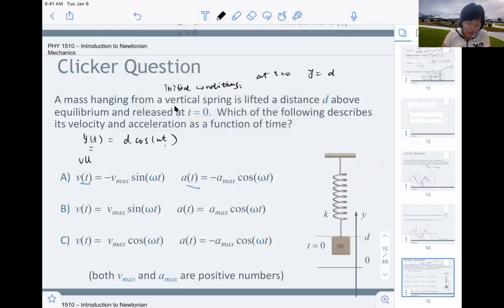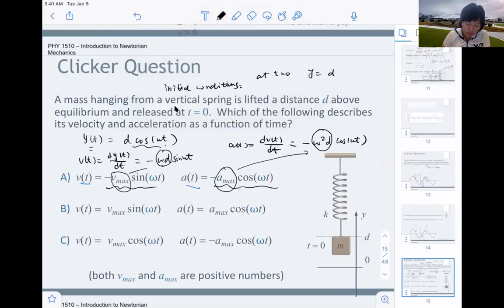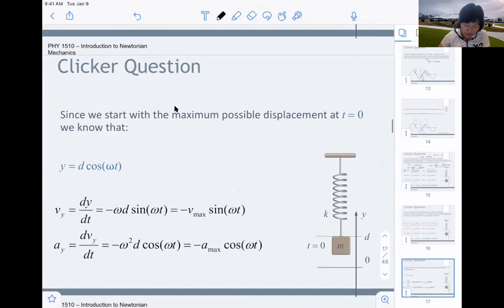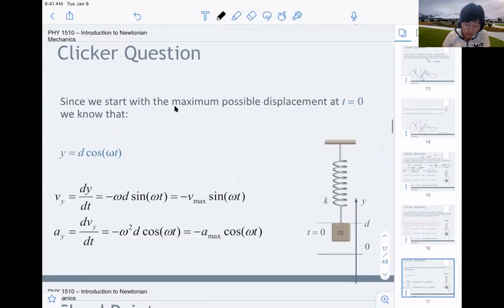To get the velocity, it's dy/dt. Taking the derivative with respect to time, so it's negative omega d sine omega t. And to get the acceleration, you do dv/dt. You take another derivative to get negative omega squared d cosine omega t. So you can see it is correctly described by these expressions, where the v maximum value is omega d and the a maximum value is omega squared d. So A is the correct answer.